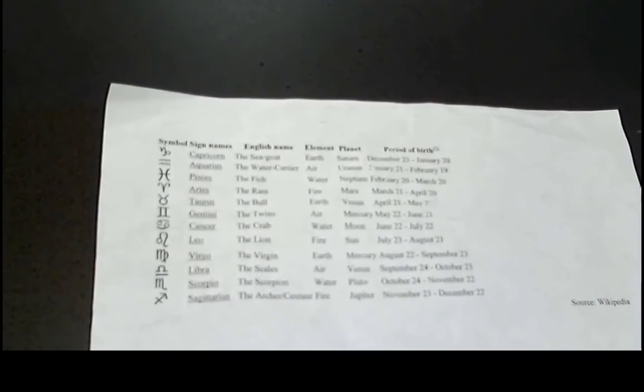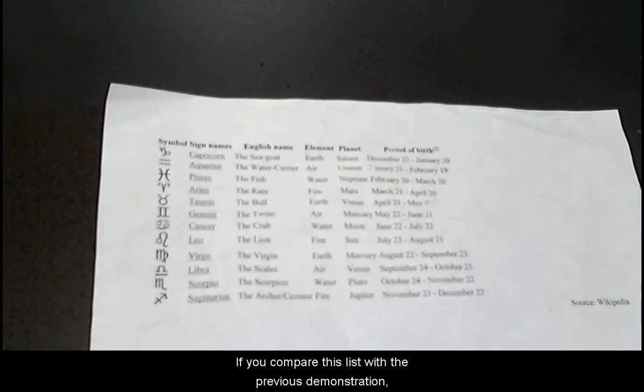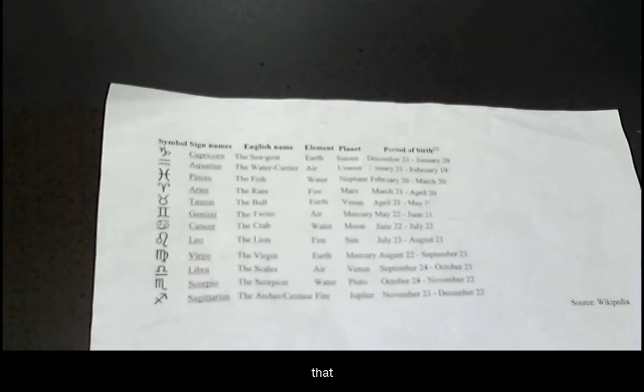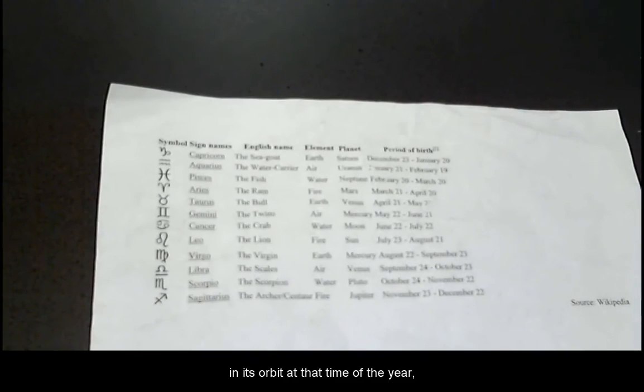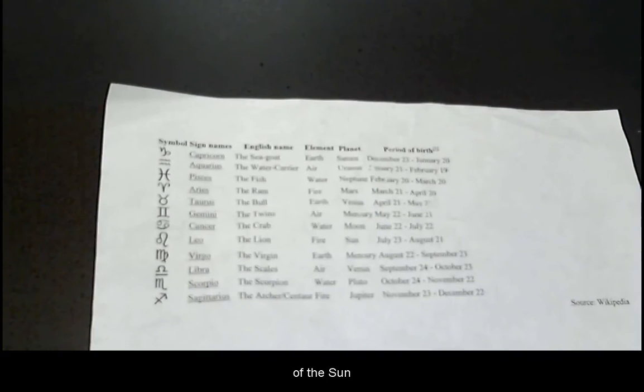This also has historical implications, as many people associate their birthdates with these constellations. If you compare this list with the previous demonstration, you will notice that the direction of the constellations is not where Earth is in its orbit at that time of the year. Rather, it is the direction of the sun as viewed from Earth at that time of the year.